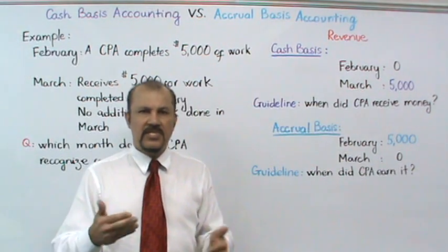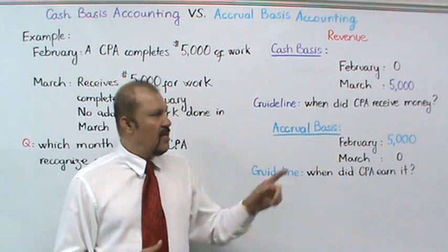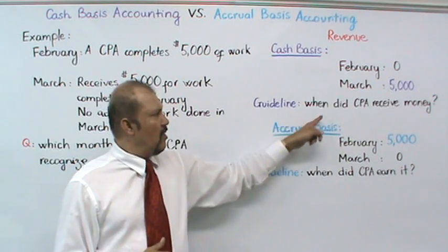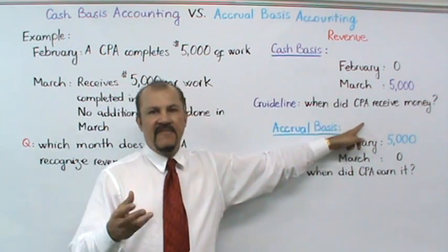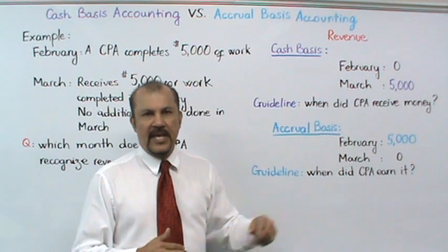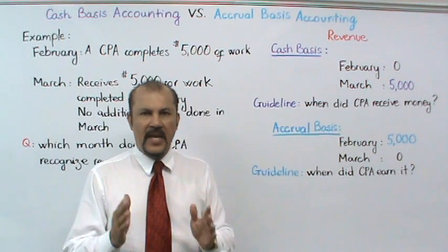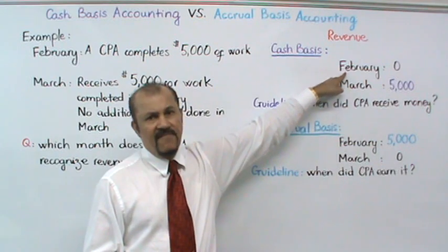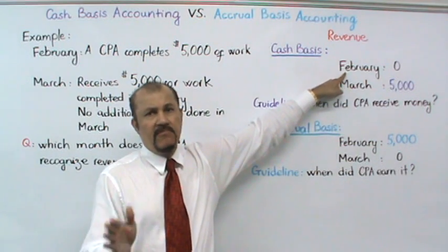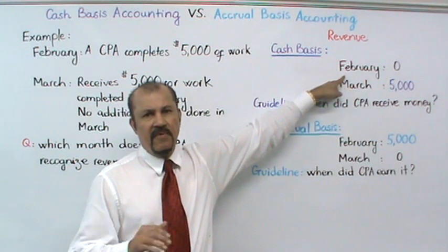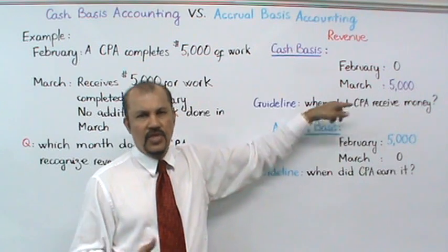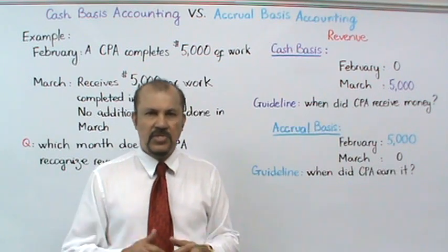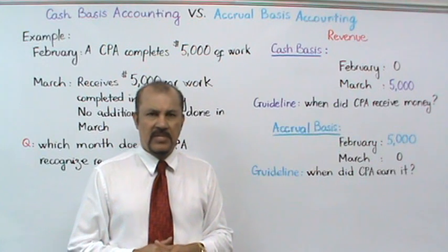What is the basis for this revenue recognition? The key question to ask yourself is: when did the CPA receive the money? In the month of February, he received no money, so his revenues were zero. But in the month of March, he received $5,000 of cash, so his revenues in March are $5,000.